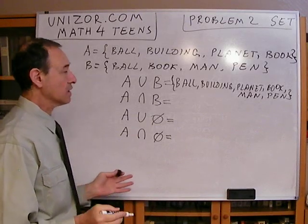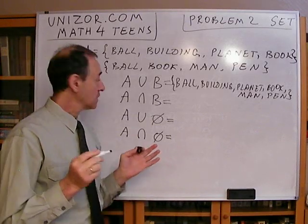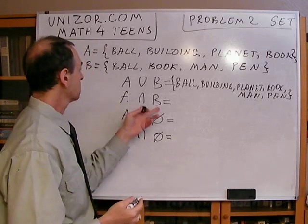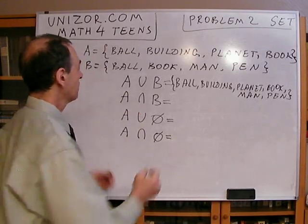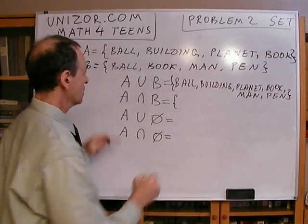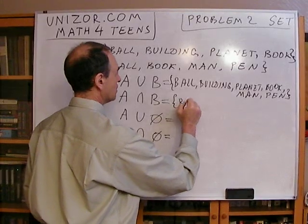Now, the intersection is a set which contains common elements between A and B. What's the common? Well, wall. Is the wall common? Yes, it is. It's contained in both.